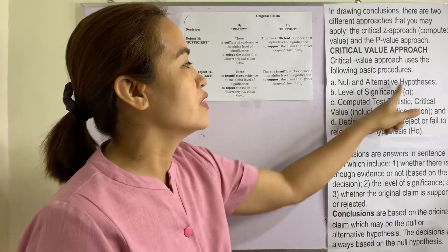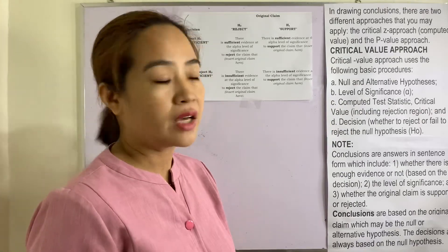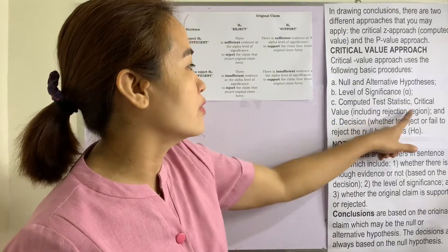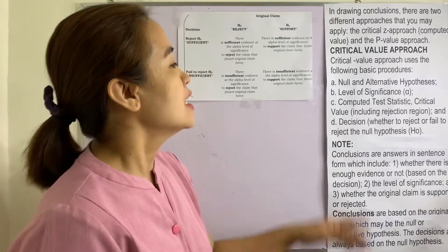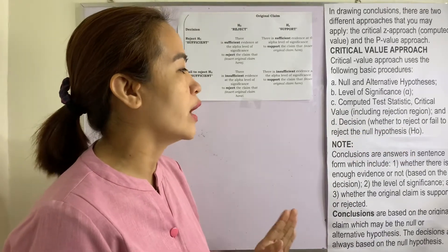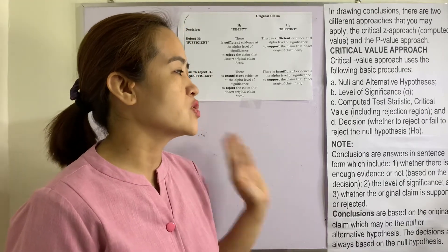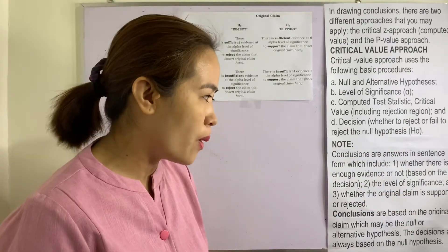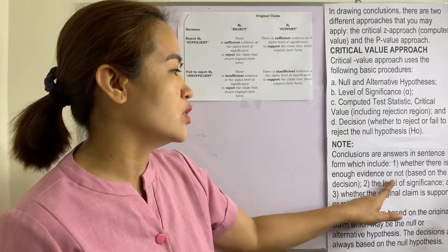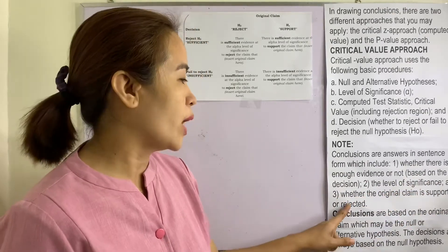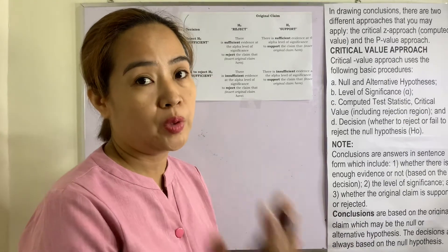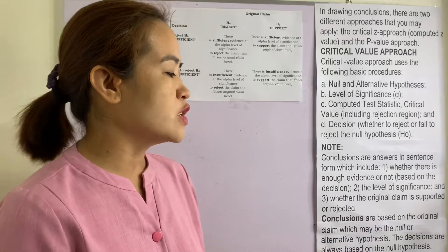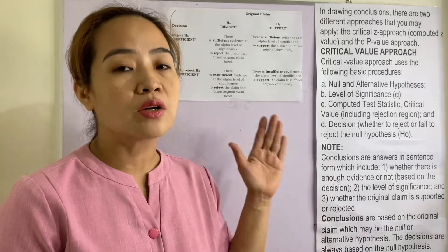The critical value approach uses the following basic procedures: number one, formulate the null and the alternative hypothesis; number two, identify the level of significance alpha; number three, compute for the test statistic value using the z computed, including the rejection region; and number four, decide whether to reject or fail to reject the null hypothesis. Note that conclusions are answers in sentence form which include whether there is enough evidence or not, based on the decision, the level of significance, and whether the original claim is supported or rejected. Decisions are always based on the null hypothesis.